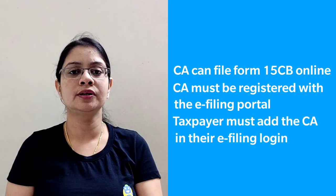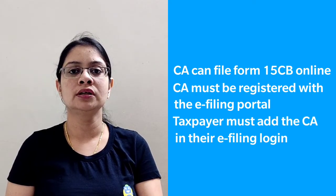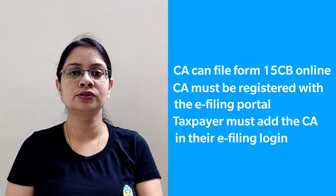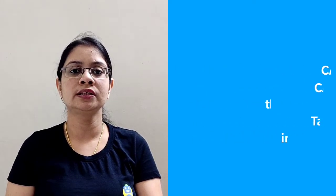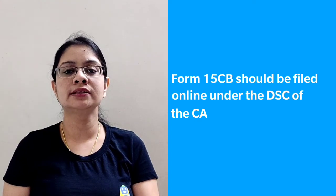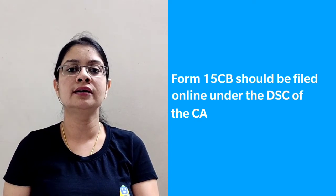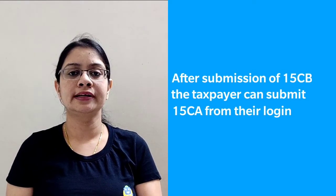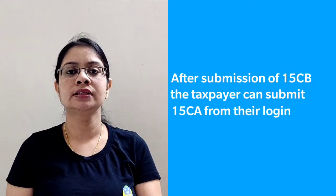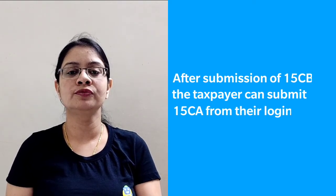You need to mention the date of deducting the TDS and the final remittance after reducing the TDS. The CA can file Form 15CB online. For this purpose, the CA must be registered as a Chartered Accountant on the e-filing portal, and the taxpayer must also add the CA for the purpose of submission of Form 15CB. The CA can fill in the details of Form 15CB and submit it online under their digital signature. It is only after the filing of Form 15CB by the CA that the taxpayer can submit a Form 15CA, after viewing the details from the Form 15CB. The taxpayer can submit Form 15CA online through a digital signature from their e-filing login.